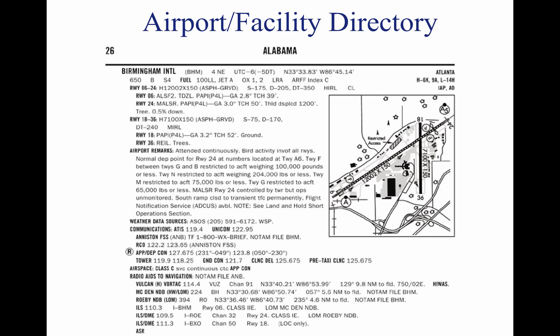This figure contains an excerpt from a directory. For a complete listing of information provided in an AFD and how the information may be decoded, refer to the directory legend sample located in the front of each AFD. In addition to airport information, each AFD contains information such as special notices, FAA and National Weather Service telephone numbers, preferred IFR routing, VFR waypoints, a listing of VOR receiver checkpoints, aeronautical chart bulletins, land and hold short operations, airport diagrams for selected towered airports, enroute flight advisory service outlets, parachute jumping areas, and facility telephone numbers. It would be helpful to review an AFD to become familiar with the information it contains.